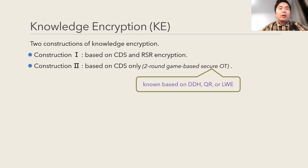In our paper, we present two constructions of knowledge encryption. The first one is based on CDS and random self-reducible encryption. The second one is based on CDS only. It means that knowledge encryption can be constructed from two-round game-based secure oblivious transfer, which is known based on DDH, QR, or LWE assumption.